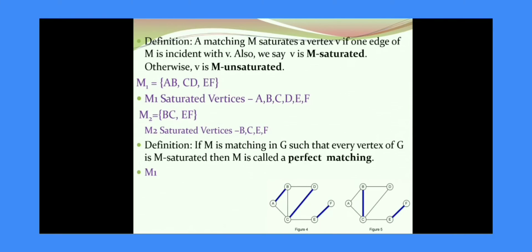If we consider the edge AB, the end vertices are A and B. Similarly, CD has C and D, and EF has E and F. So a vertex V is said to be M-saturated if it is an end vertex of an edge in M.